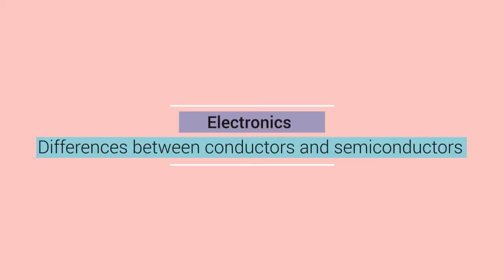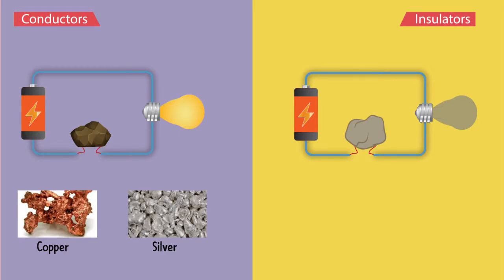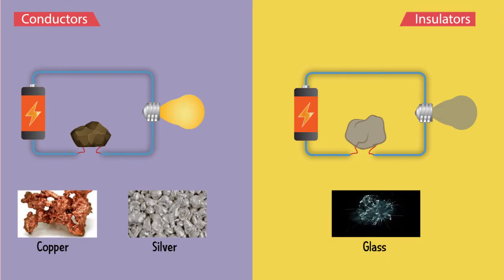You must be aware about conductors and insulators. In conductors, electricity flows freely but not in insulators. Copper and silver are good conductors of electricity. Glass pieces are examples of insulators which show resistance to the flow of electricity.